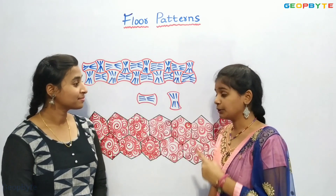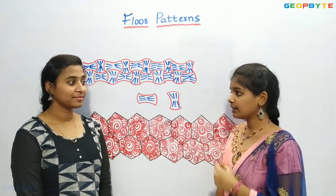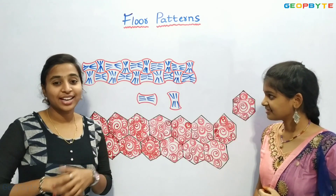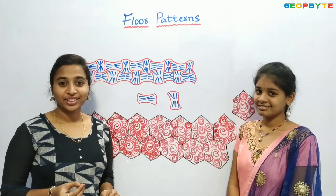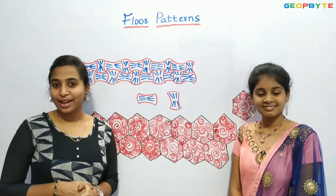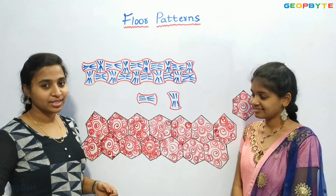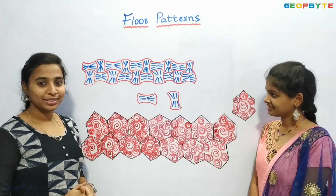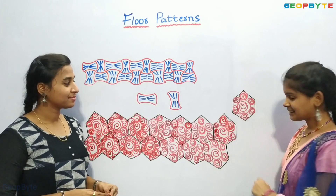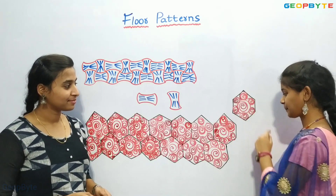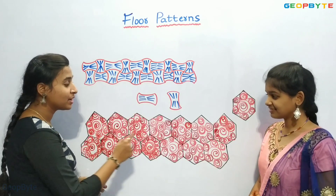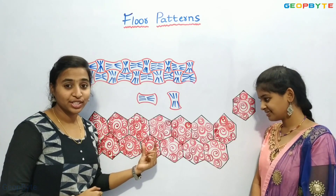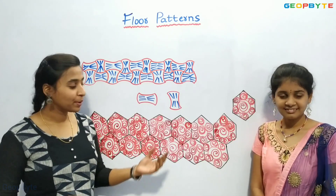Hey kids! Have you ever seen designs on a floor? Do you know how these designs are made? These designs are made by covering the floor with small tiles without any gap. Here we have two tiles. If you observe this pattern, they are arranged on the floor without any gap. This tile has six sides, and the tiles are arranged so that there is no gap between them.